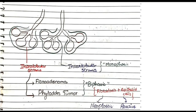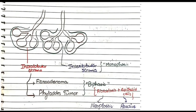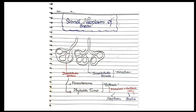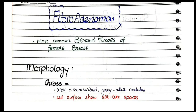This biphasic nature is a similarity between fibroadenoma and phyllodes tumor. In contrast, interlobular stromal tumors are monophasic, meaning only the stromal component is growing and the epithelial component of the acini does not grow. Now let's study these two neoplasms in detail, starting with fibroadenoma.